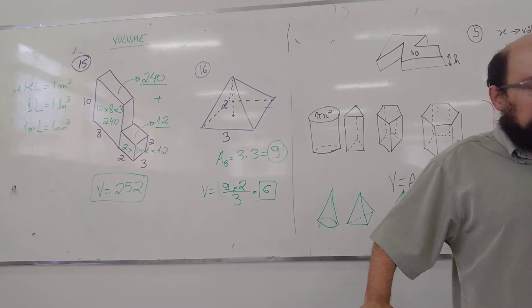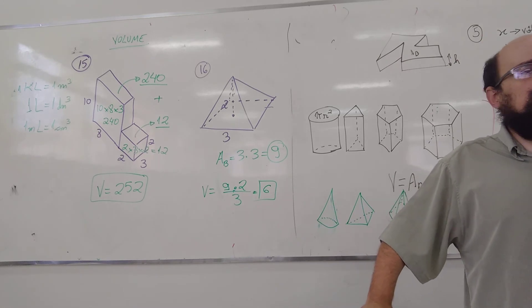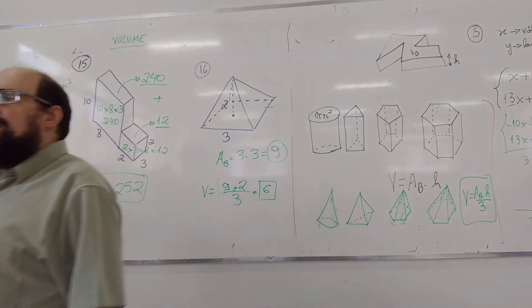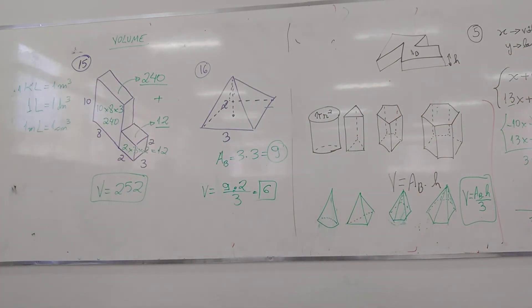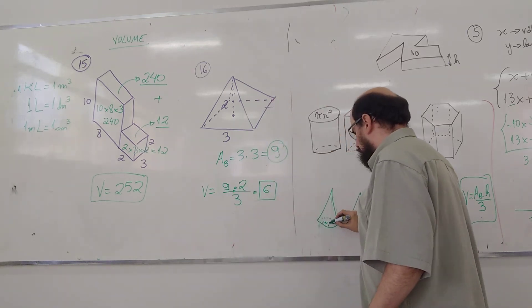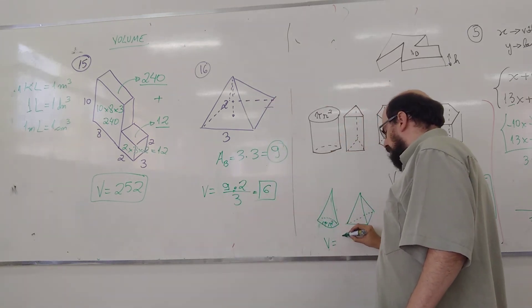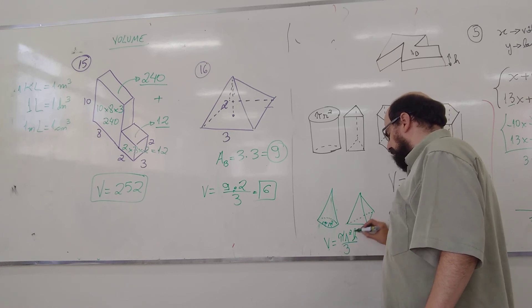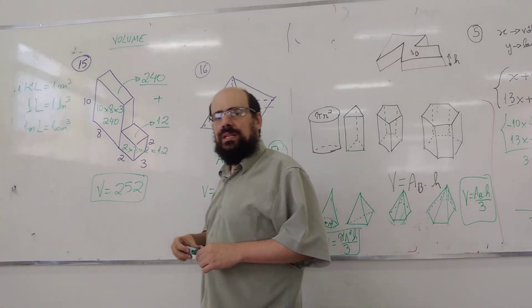A minha dica é que a maioria dos alunos não sabe isso porque os professores não ensinam, não dá tempo. Fica sempre no final do ano. Volume de cone e pirâmide, área da base vezes altura dividido por 3. Então, aqui é pi R². Tem gente que fica decorando que a fórmula do volume é pi R²h sobre 3. Não precisa disso. Vocês entenderam isso, o volume?